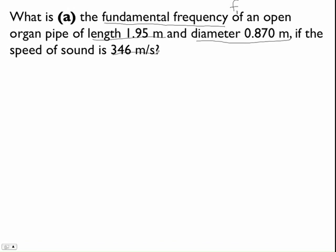if the speed of sound is 346 m/s. So let's write down the things that we know. We know that we have the length of the pipe at 1.95 meters. We know we have the diameter of the pipe at 0.87 meters.